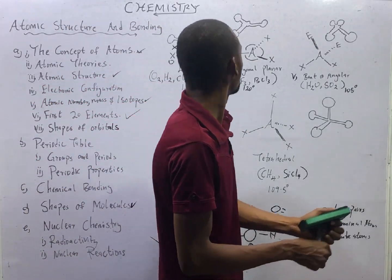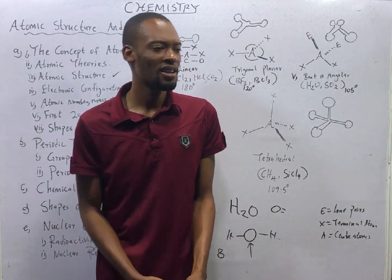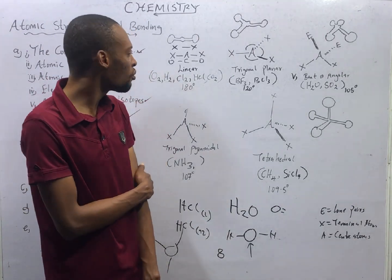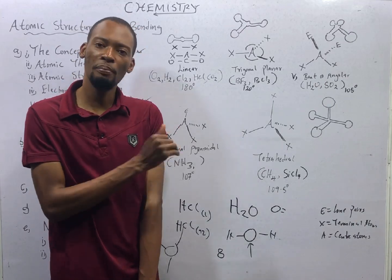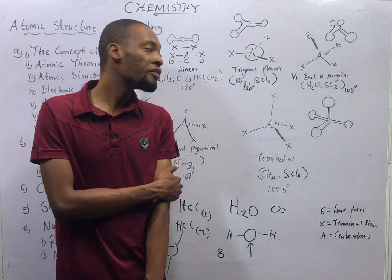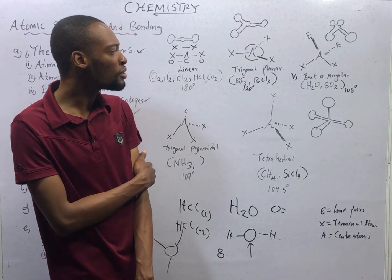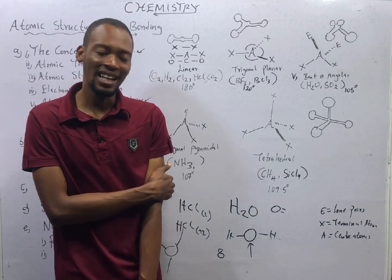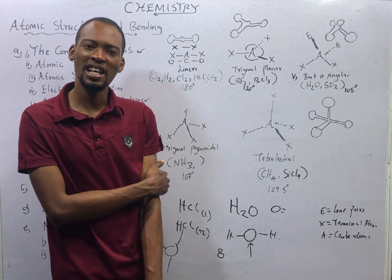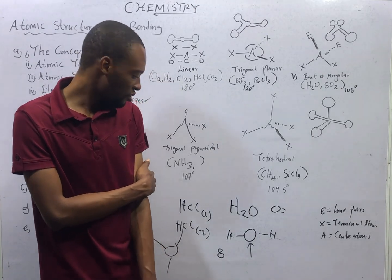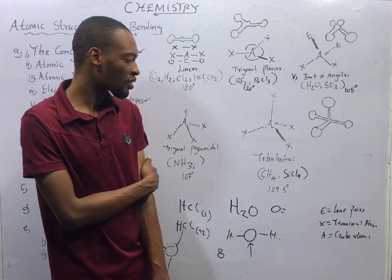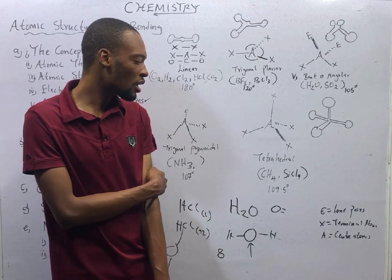In summary, molecules exist in different shapes. Linear molecules — O2, H2, Cl2, HCl, CO2 — have a bond angle of 180 degrees. Trigonal planar molecules — BF3, BCl3 — have a bond angle of 120 degrees. Bent or angular or V-shaped molecules — H2O and SO2 — have a bond angle of 105 degrees. Ammonia NH3 is trigonal pyramidal with a bond angle of 107 degrees. Methane CH4 is tetrahedral with a bond angle of 109.5 degrees.